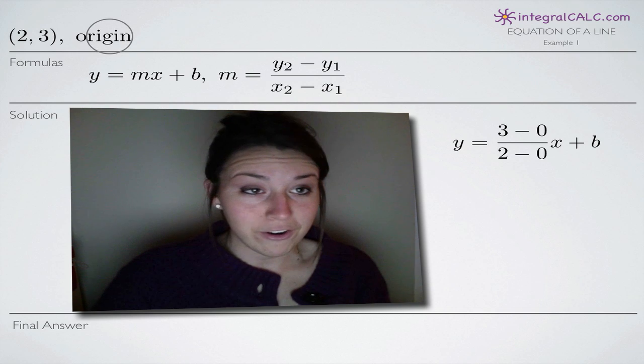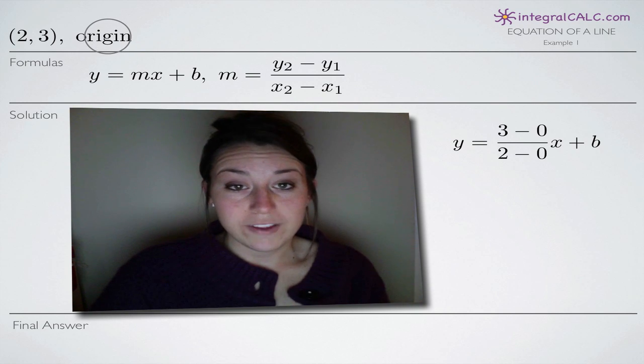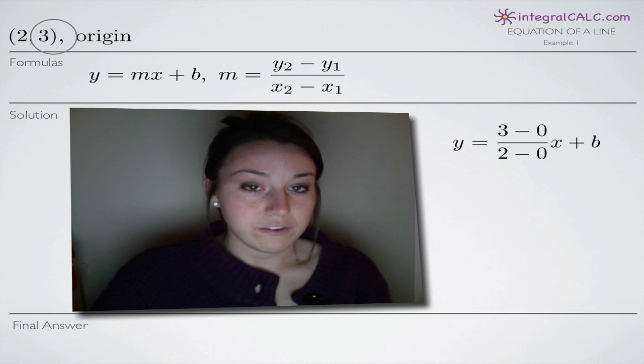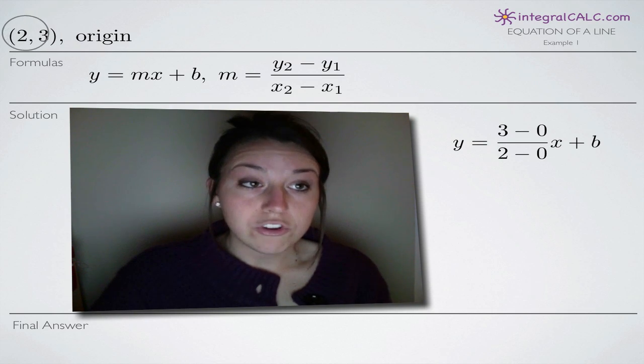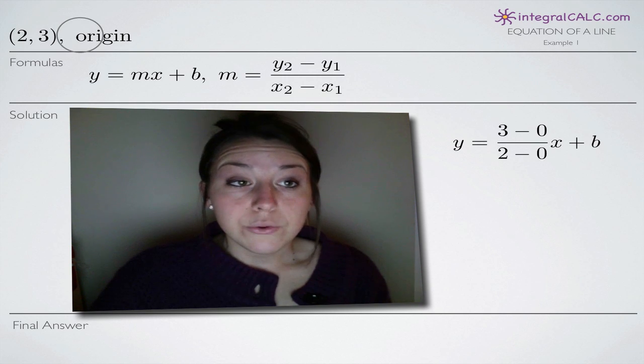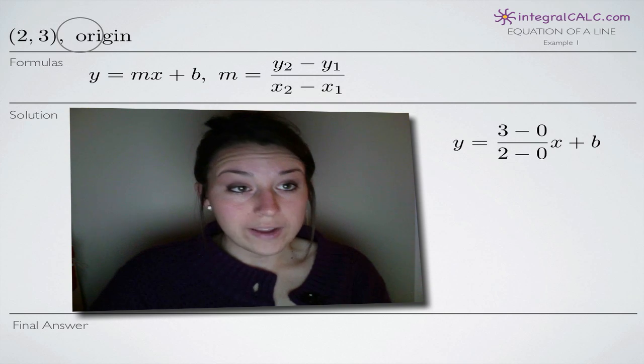But it doesn't really matter. You could assign x sub 2, y sub 2 to either of the points. It's really inconsequential, but I'm going to say that (2,3) is x sub 2, y sub 2 and that (0,0) is x sub 1, y sub 1.